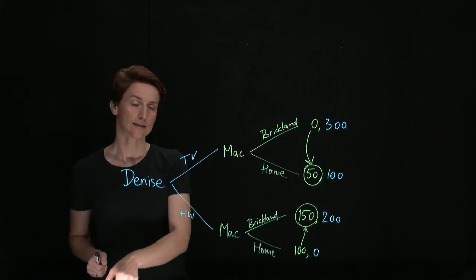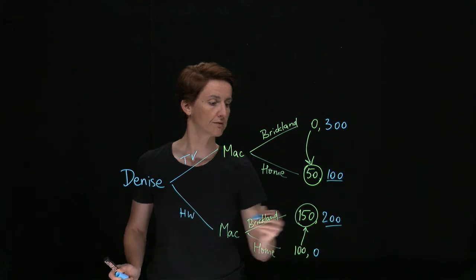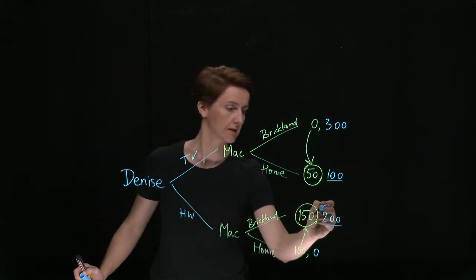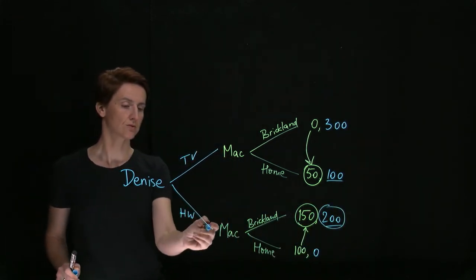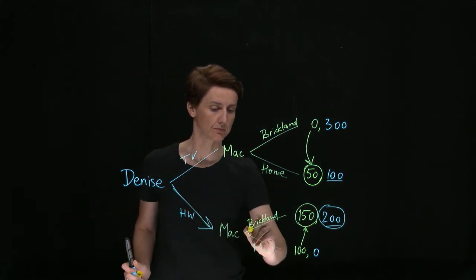Then Denise is actually choosing between these two outcomes. So she's comparing these two payoffs. This is the higher one. So she will choose to do her homework and he will choose to take her to Brickland.